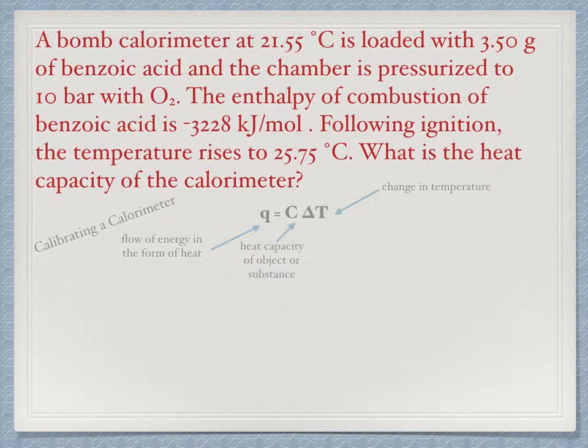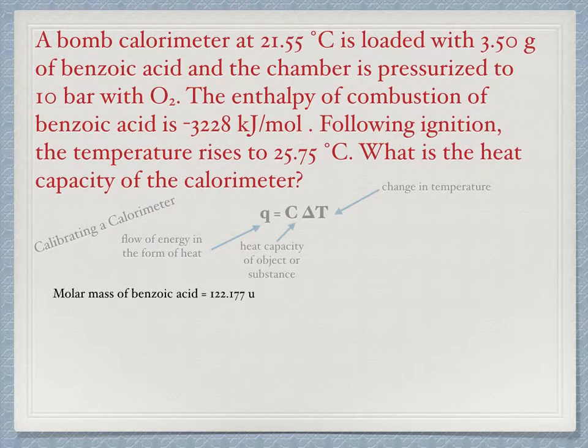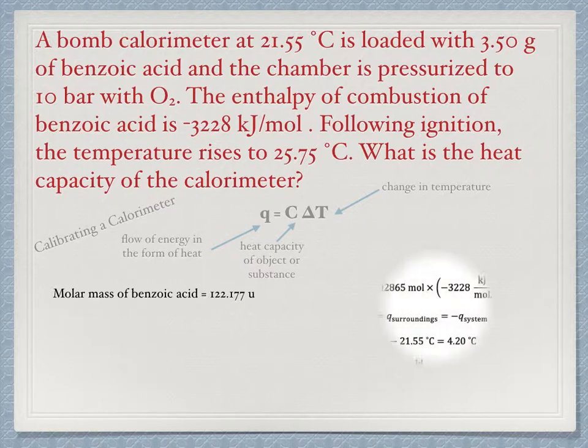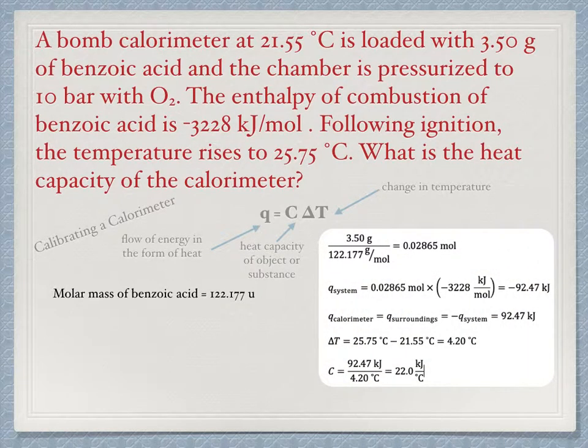The standard we use here is benzoic acid. We are given its molar enthalpy of combustion and the mass used. We must find its molar mass to convert the 3.5 grams into moles of benzoic acid. Looking it up, we find it to be 122.177 grams per mole. Our calculations will therefore be 3.50 grams divided by 122.177 grams per mole is 0.02865 moles.